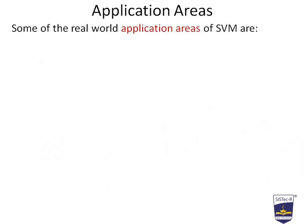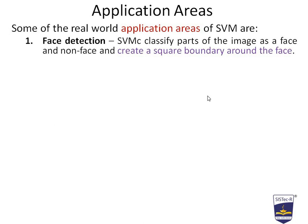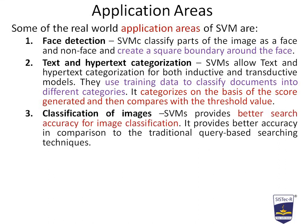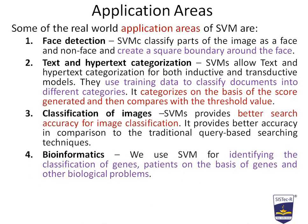Now let's look at the application areas of SVM. The first is face detection — SVM classifies parts of an image as face or non-face and creates a square boundary around the face. The second is text and hypertext categorization — SVMs allow categorization for both inductive and transductive models, using training data to classify documents into different categories based on scores compared with a threshold value. The third is image classification — SVM provides better search accuracy than traditional query-based searching techniques. Fourth, bioinformatics — we use SVM for identifying and classifying genes and patients on the basis of genes and other biological problems.